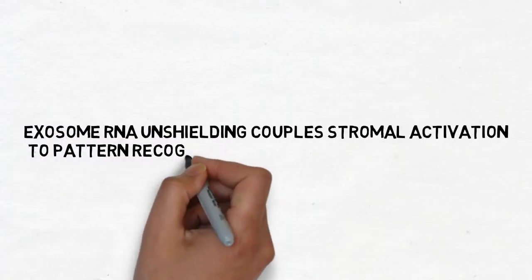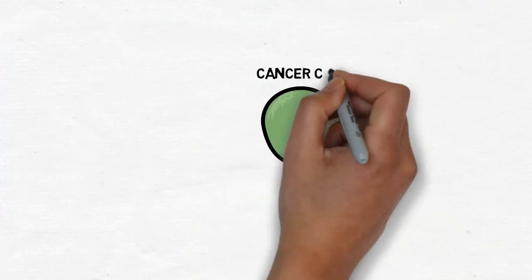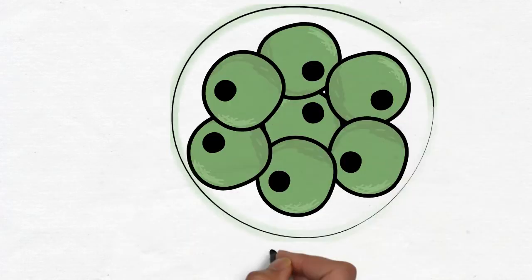How do cancer cells recruit and corrupt other cells for their nefarious purposes? A simple view of a tumor is of millions of cancer cells, multiplying and then working together to form and sustain a tumor.